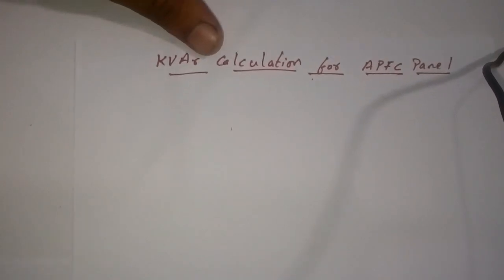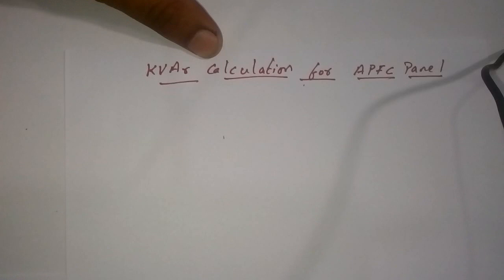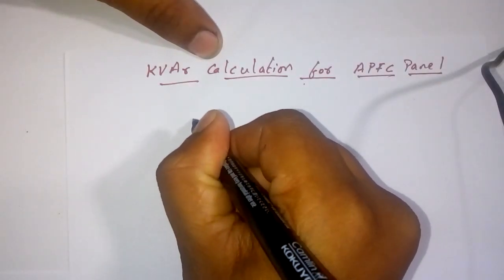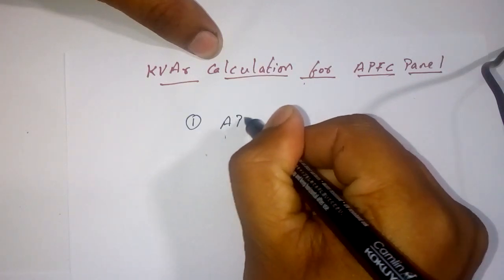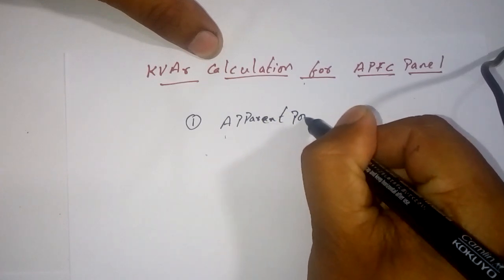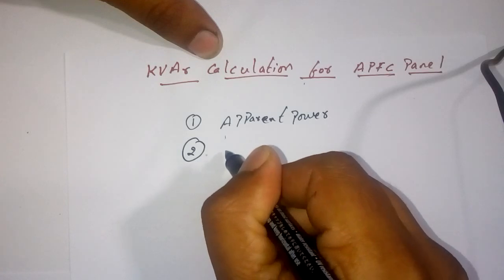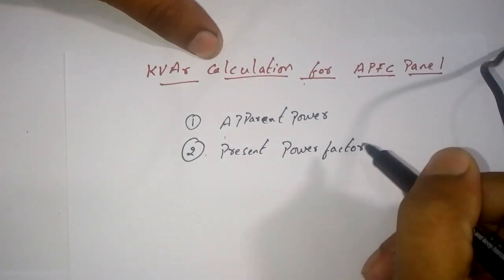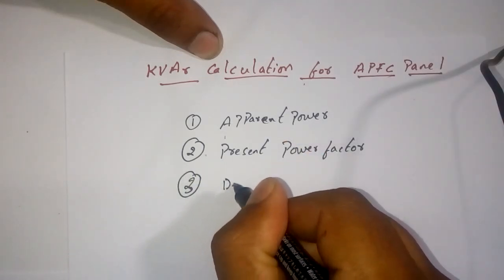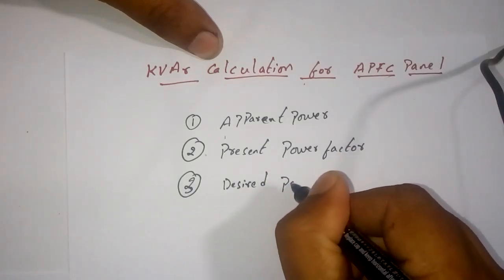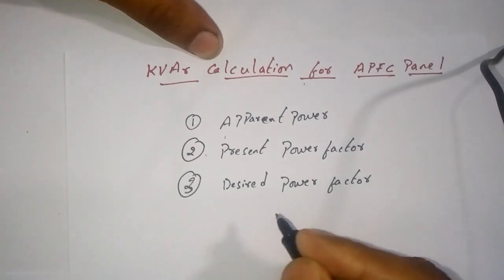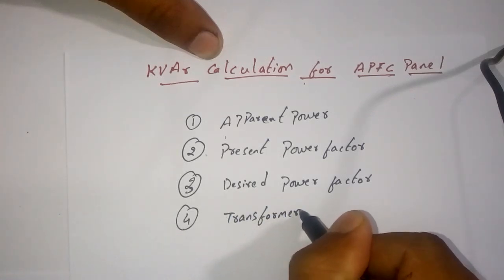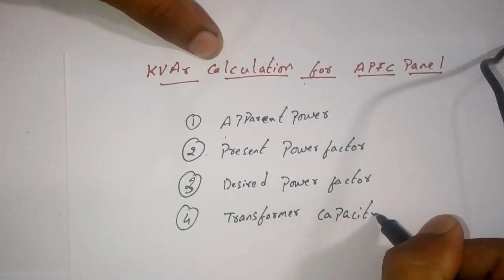Good morning friends. Today I'm going to explain the KVAR calculation for an APFC capacitor bank — how the capacitor bank calculation is done in a real-time scenario. Before you proceed with the KVAR calculation, you need to know about four things: what is the apparent power, what is the present power factor, what is the desired power factor you're expecting from the capacitor bank, and what is the transformer installed at the site.